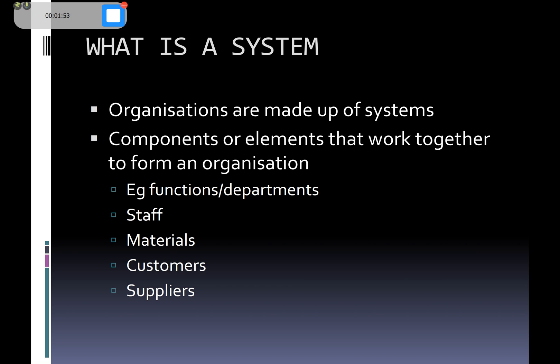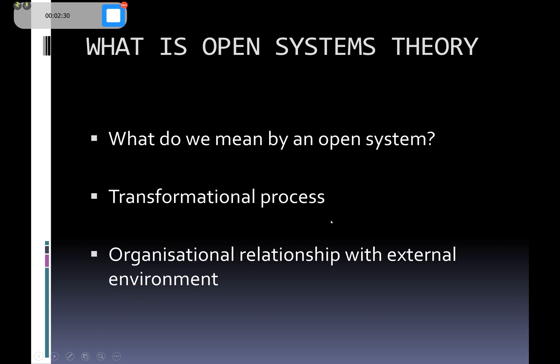Systems theory also includes things that happen outside of the organisation — everything that has an impact on how the company operates and does its job. This applies to the public sector as well, which is why 'organisations' is probably a better term. Systems theory is about how all these different aspects within the organisation work together, interact, and impact on each other.